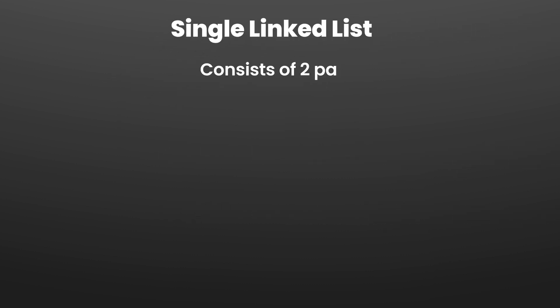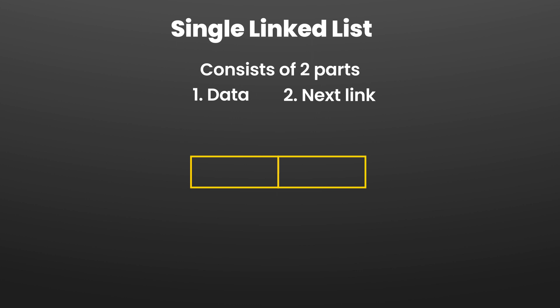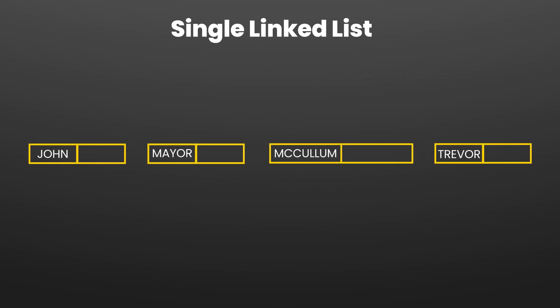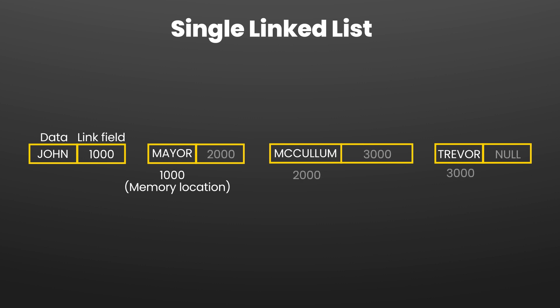If we talk about the singly linked list, it consists of two parts: the data and the next link. A node in a singly linked list has a data box and a link box. If we were to have multiple nodes — for example, the employee names John, Mayor, McCallum, and Trevor — we would place them in this order. For the first node we have John, and the link field contains the pointer to the memory location of the next node, which is Mayor. Similarly, we can populate this linked list further. In a singly linked list, the link only contains the address of the next node.